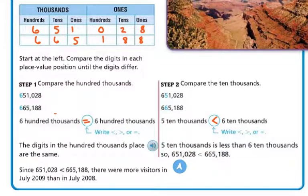So 651,028 is going to be less than 665,188.